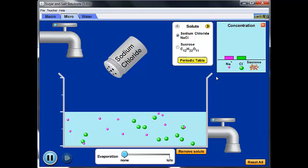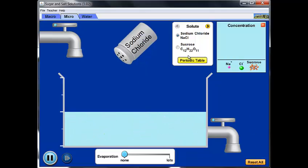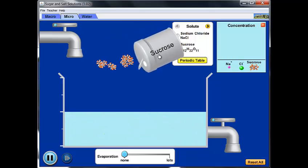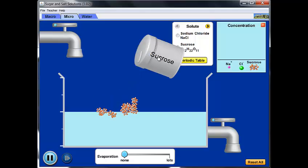Now let's remove the salt and add in the sugar instead. Notice here at the particulate level that the sugar molecules do not break apart, unlike the salt. Instead, the carbon, hydrogen, and oxygen atoms are held together by covalent bonds. Sugar doesn't lead to conductivity because the molecules do not break up. Only neutral molecules are present here in solution.